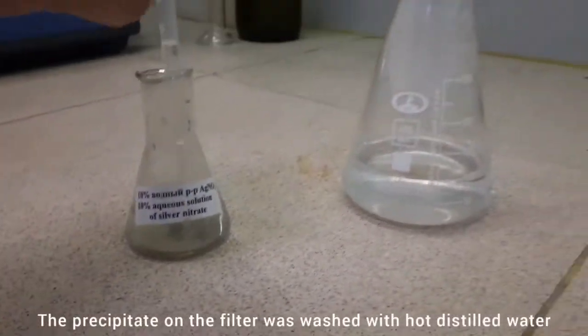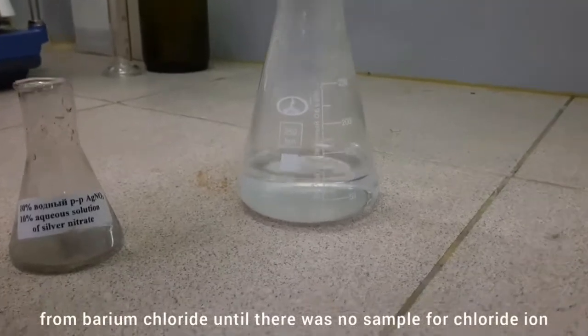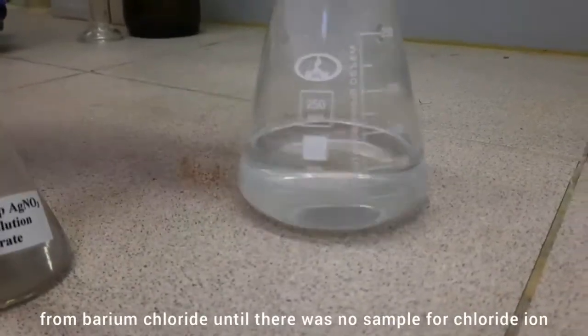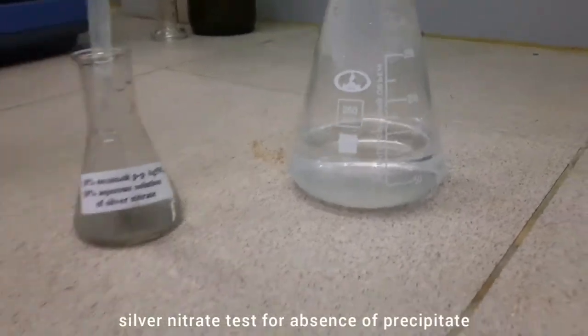The precipitate on the filter was washed with hot distilled water from barium chloride until there was no sample for chloride ion. Silver nitrate showed absence of precipitate.